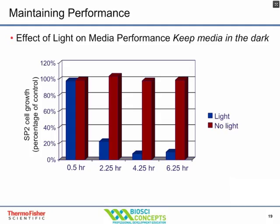When growing cells, it's important to protect your media from light. Light will damage media in a fairly short period of time. Charts show that media exposed to fluorescent light for half an hour up to six and a quarter hours loses a significant amount of growth potential compared to protected media. While this is demonstrated with a cell line known to be sensitive, the point stands that light damages amino acids, vitamins, and other media components, producing sulfur and other compounds that negatively affect cell growth.